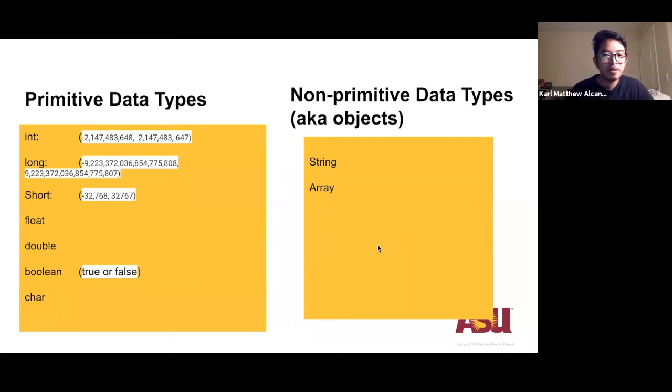I put some of the ranges that are characteristic of each data type. So an integer can be within the range of negative 2 billion to a little over 2 billion. For example, if you try to assign an integer value for a variable X and it was 2,147,483,648, it would not be able to run. The program would not be able to run.